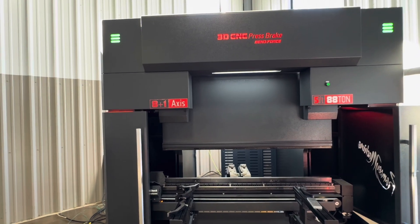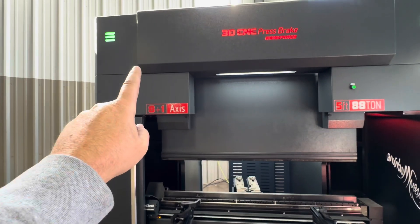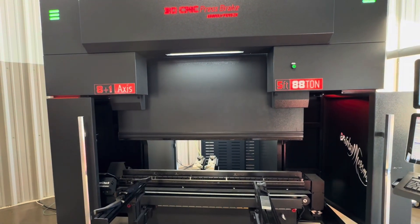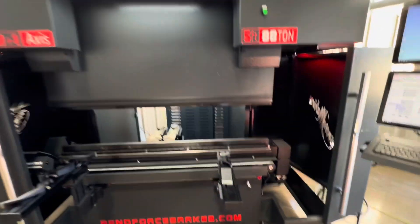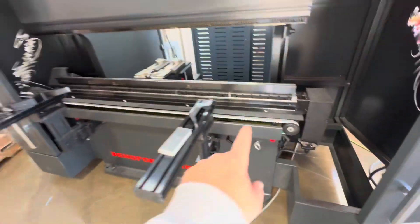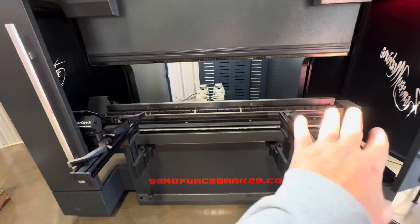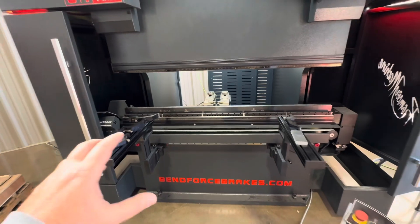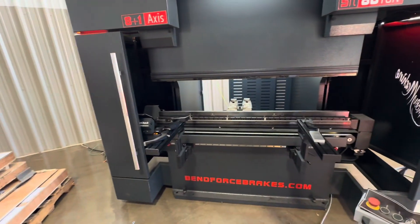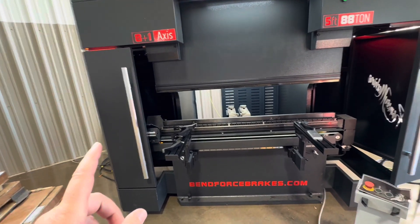So let's count them up. So we have Y1, Y2, independent cylinder control over both cylinders. The plus one is the crowning system right here. That's our crowning motor that drives some wedges underneath the bed. When you have a full five foot wide piece, you have a natural crowning that occurs and this compensates for that.